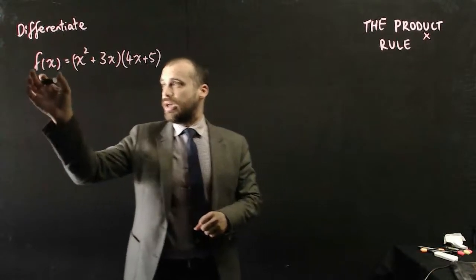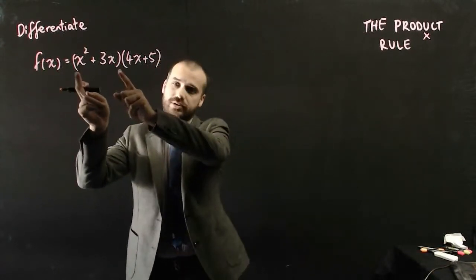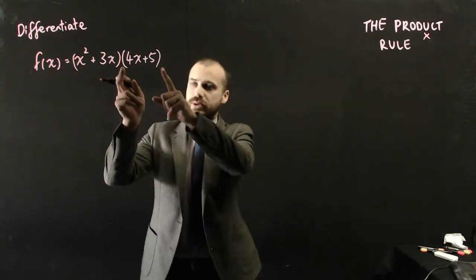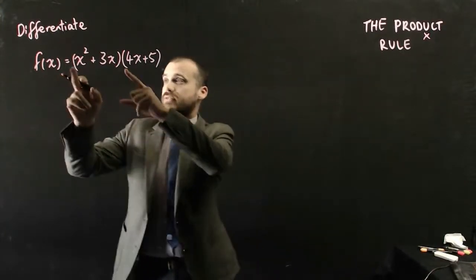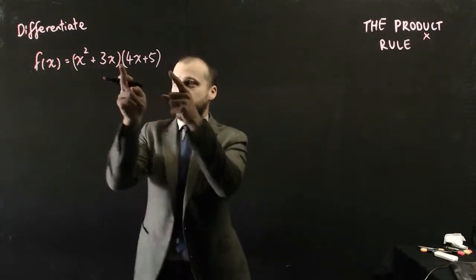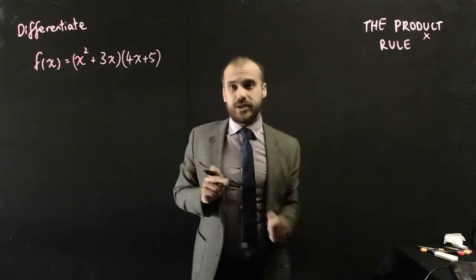So here's an example: f(x) equals (x² + 3x) times (4x + 5). Now this is a function multiplied by another function, and we can use our product rule.